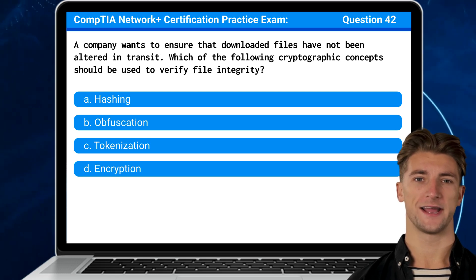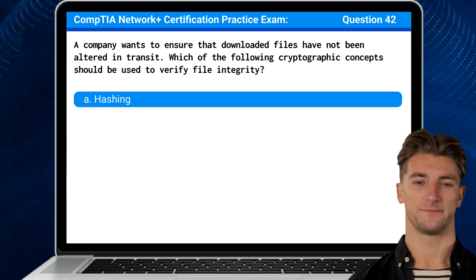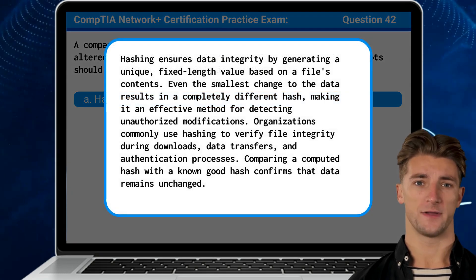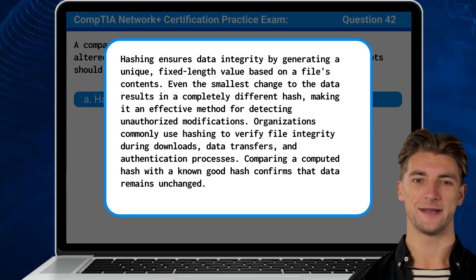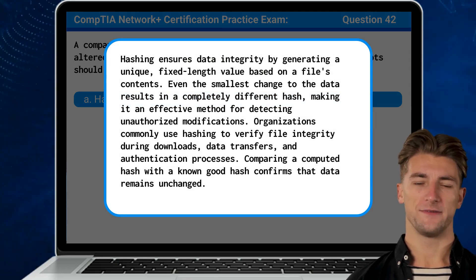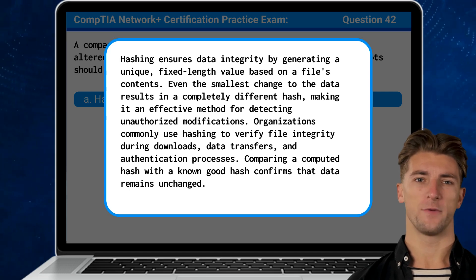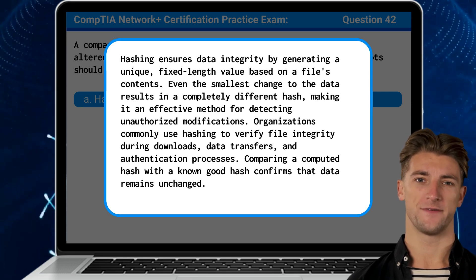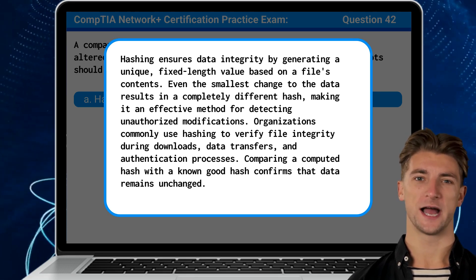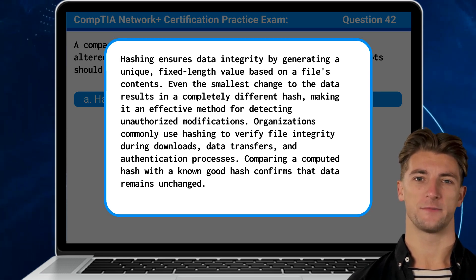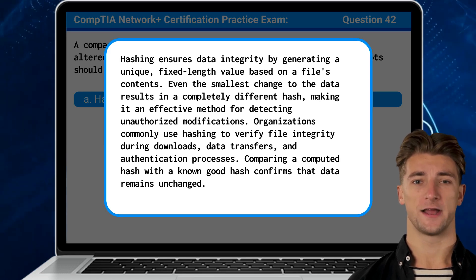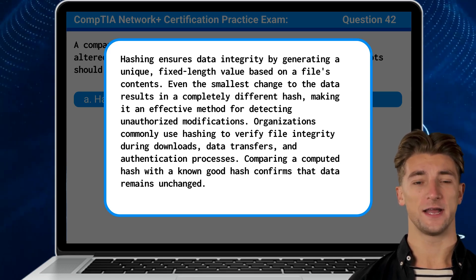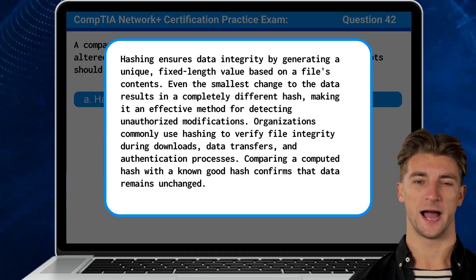The answer is A. Hashing. Hashing ensures data integrity by generating a unique, fixed-length value based on a file's contents. Even the smallest change to the data results in a completely different hash, making it an effective method for detecting unauthorized modifications. Organizations commonly use hashing to verify file integrity during downloads, data transfers, and authentication processes. Comparing a computed hash with a known good hash confirms that data remains unchanged.